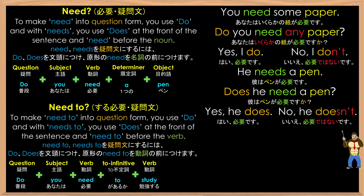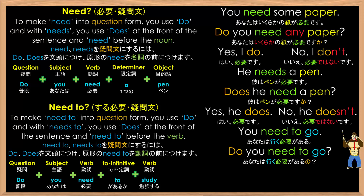To make 'need to' into question form, you use 'do', and with 'needs to', you use 'does' at the front of the sentence, and 'need to' before the verb. So for example, 'you need to go' becomes 'do you need to go?' And you can answer: yes, I do. No, I don't. All you have to do is put 'do' at the beginning of the question, and don't forget to put 'to' between 'need' and the verb — as in 'do you need to go?'